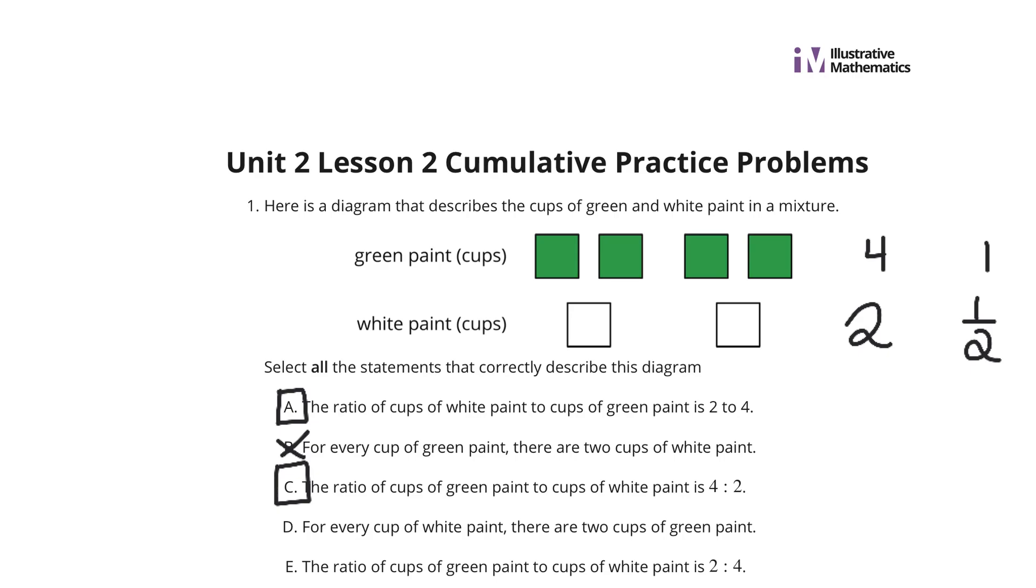D, for every cup of white paint, there are 2 cups of green paint. Well, if I divide by 2 here, I get 1. If I divide by 2 here, I get 2. And so, sure enough, 1 cup of white paint is 2 cups of green paint, so D is true.